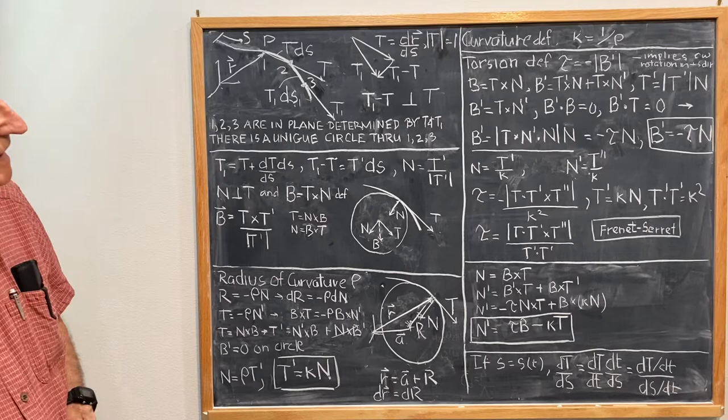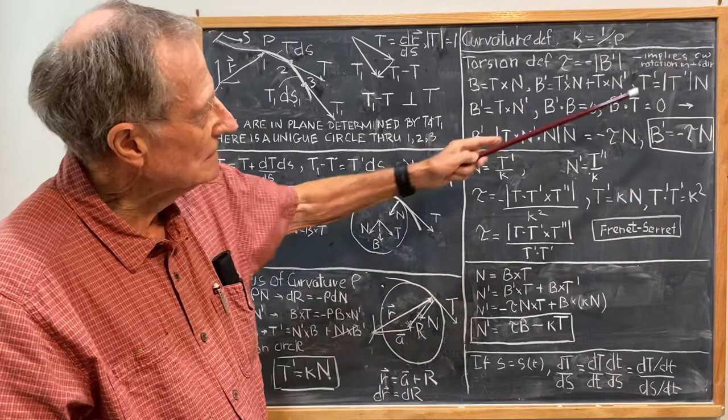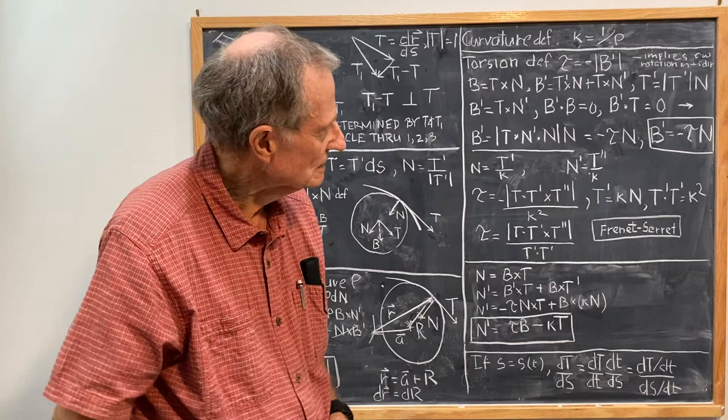Now we're going to look at the torsion. Torsion is another definition. By definition, torsion is the magnitude of the absolute value of B prime, rate of change of B with respect to S, with a minus sign in front of it, and the minus just implies clockwise rotation in the plus S direction.